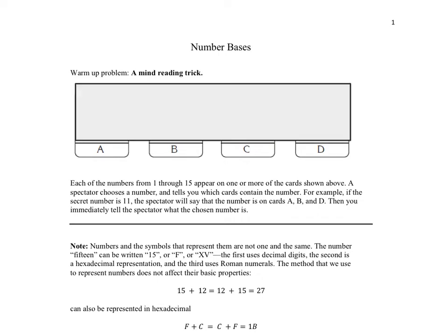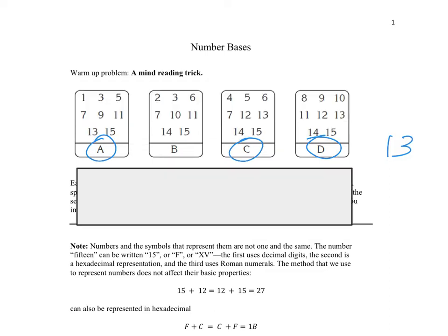Let's play this game with the cards covered up. Let's say a student says, 'I'm looking at a number that's on A and on C and on D.' The instructor can immediately say they must be looking at 13. Let's uncover and find out. Indeed, the number is 13. So 13 appears on A, doesn't appear on B, appears on C, and appears on D. After we learn a little bit about binary numbers, we'll talk about how this works.